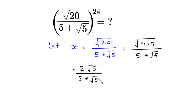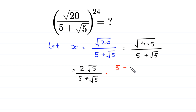Now, to rationalize the denominator of this expression, we multiply and divide this expression by the conjugate of the denominator 5 plus root 5. The conjugate of this expression is 5 minus root 5, so we multiply and divide by 5 minus root 5.